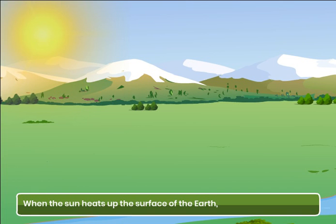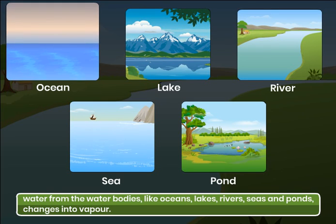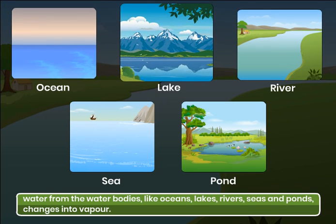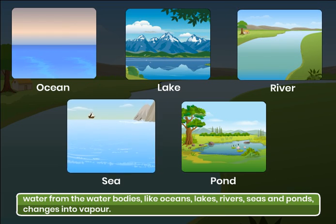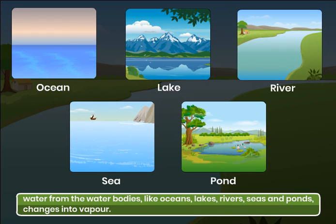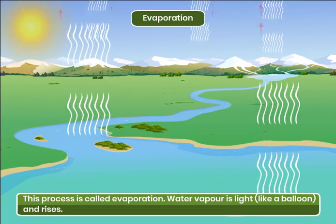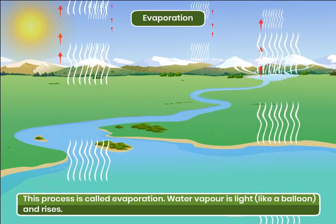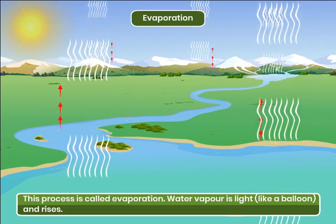When the sun heats up the surface of the earth, water from the water bodies, like oceans, lakes, rivers, seas and ponds, changes into vapor. This process is called evaporation.